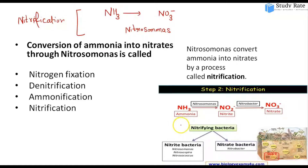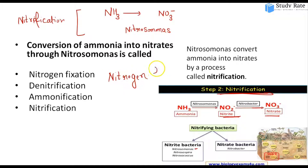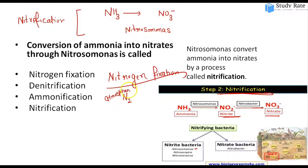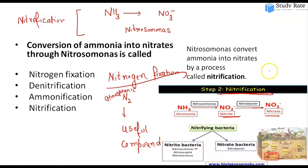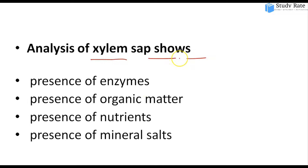In the nitrification process, ammonia is first converted to nitrite by Nitrosomonas bacteria, then Nitrobacter bacteria converts nitrite to nitrate. This process is called nitrification. It is the second step in the nitrogen fixation cycle, where atmospheric nitrogen is converted into useful compounds.